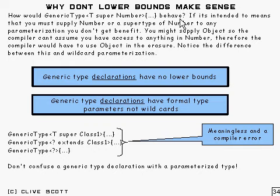Well, if you expect it to mean that you must supply number or a super type of number to any parameterisation, then you get no benefit from it at all.